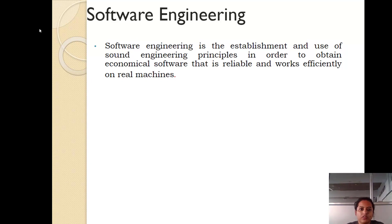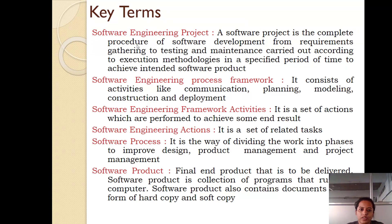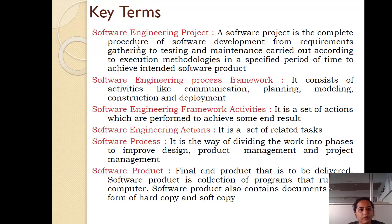Now let us discuss some key concepts related to software engineering. The first one is the software engineering project. A software project is the complete procedure of development from requirements gathering to testing and maintenance, conducted according to execution methodologies in a specified period of time in order to achieve the intended software product. All the steps from collecting requirements from the customer to implementation, testing, delivering it to the customer, and maintaining that software — all done within a period of time — is called a software engineering project.